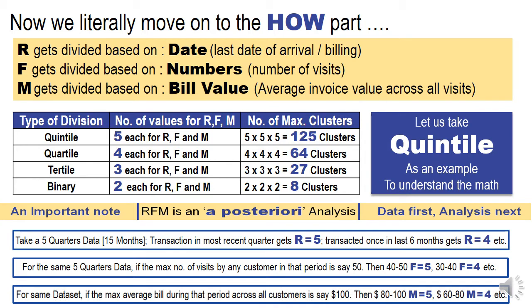Similarly, for the same data set, if the maximum average bill during that period across all customers was $100, then clubbing $80 to $100 billings gives an M score of 5, and $60 to $80 gives an M score of 4, and so on. Understand that 5 — whether it is R, F, or M — is the best score; 4 is the next best score; and 1 is the worst score.